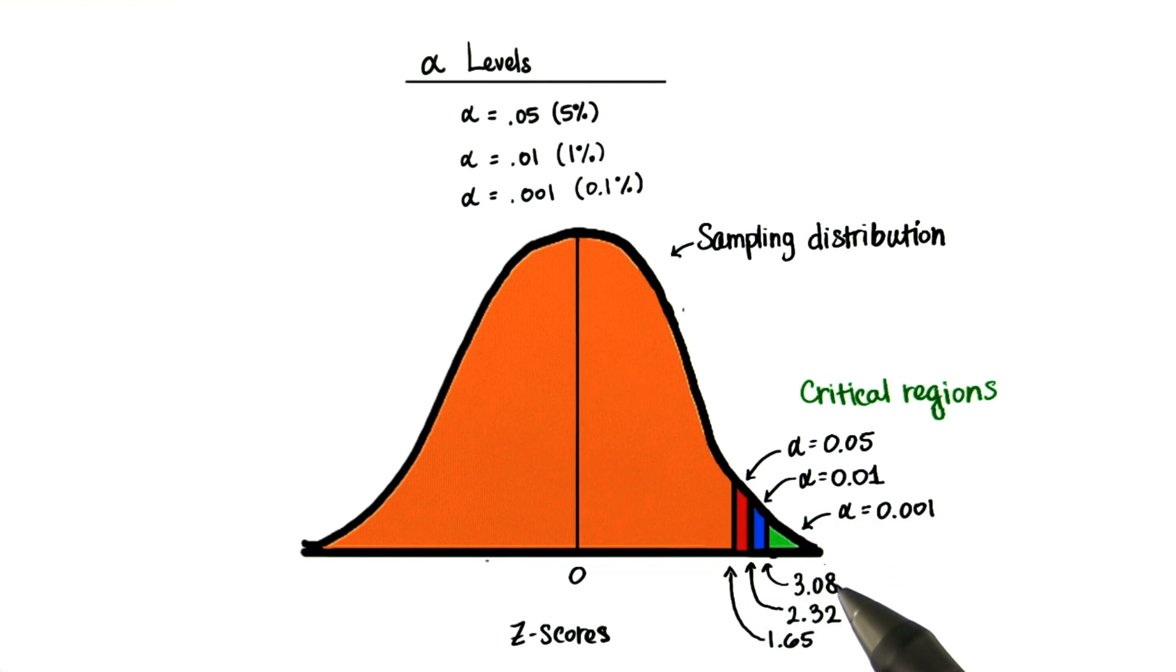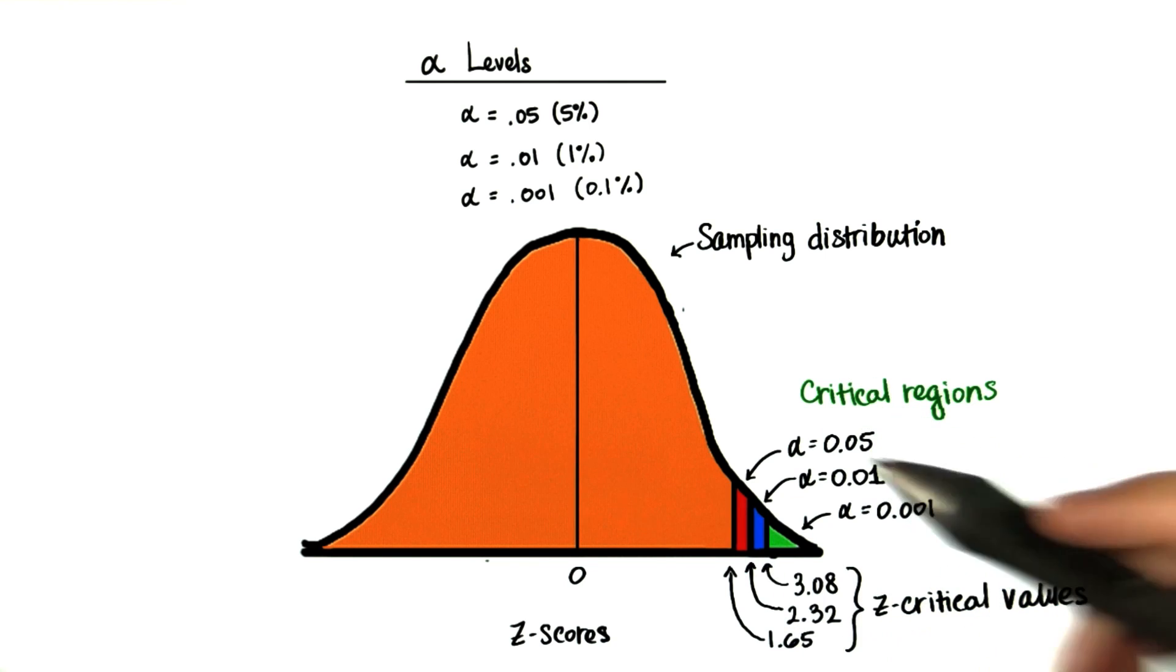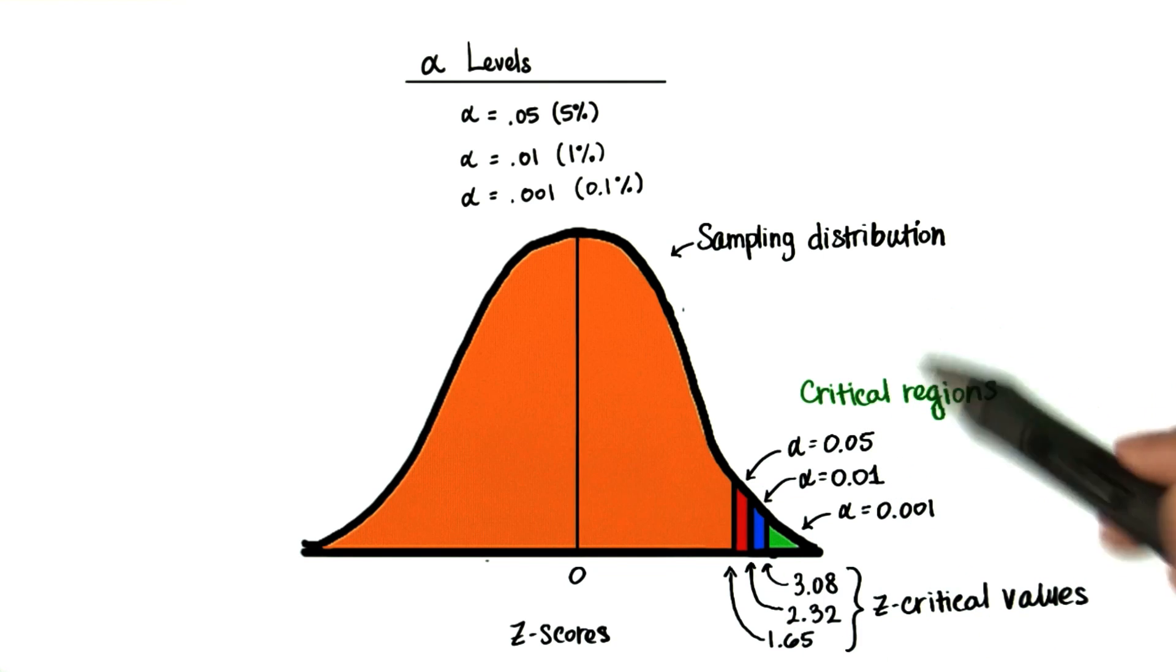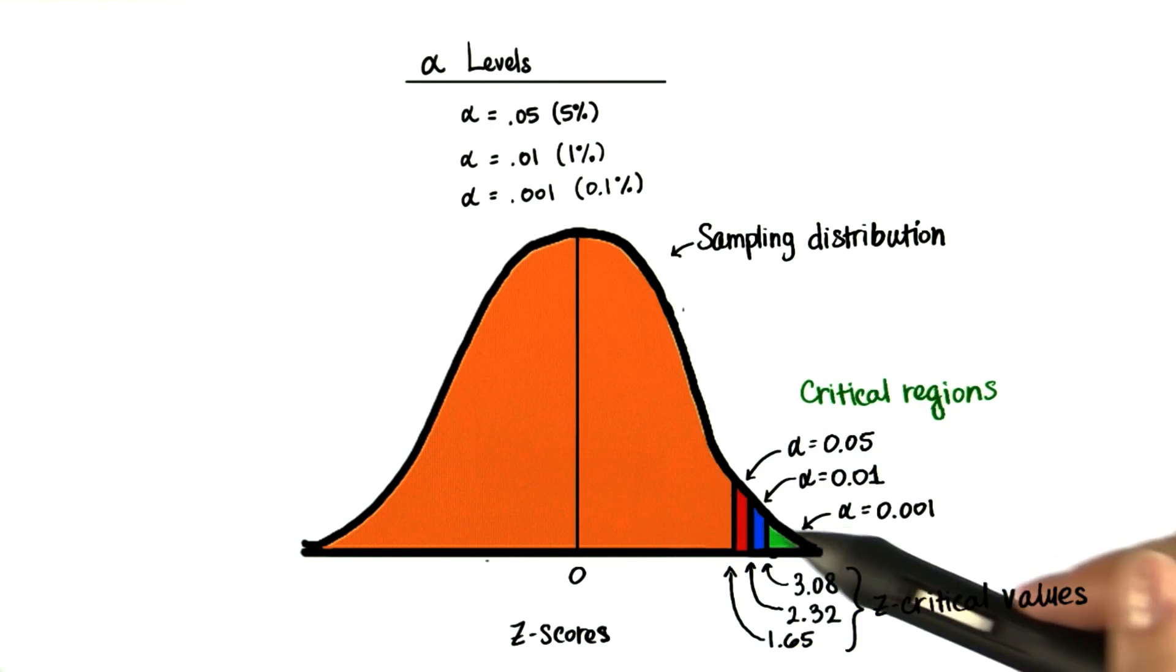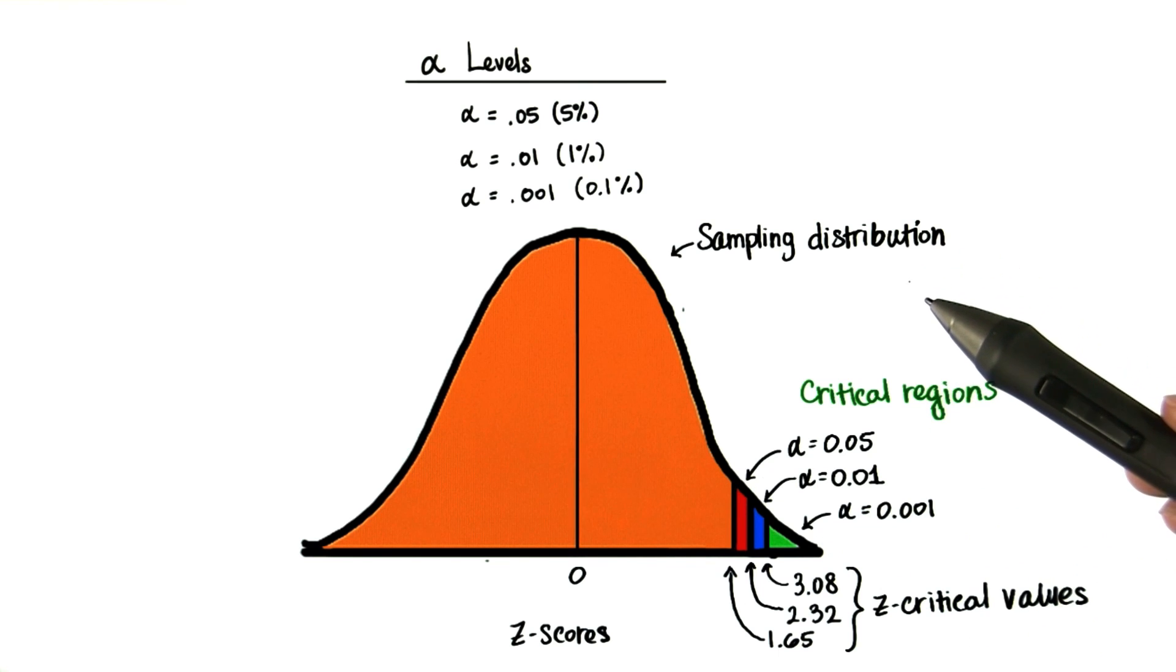The z-scores corresponding to these alpha levels are called the z-critical values. So we'll find our sample mean, calculate the z-score in the distribution of sample means, or the sampling distribution, and then look to see where this mean falls.